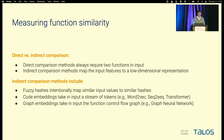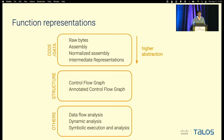Indirect comparison methods include fuzzy hashing and embeddings. Among embeddings, the most prominent are code embeddings, which take an input stream of tokens using famous NLP models, and graph embeddings, which take as input the function control flow graph — the most prominent example being graph neural networks. In terms of feature extraction, there are several features at different costs: features based on code, features based on the structure of the function like the control flow graph, annotated control flow graphs with node features, and also more expensive features like data flow analysis, dynamic analysis, and symbolic execution.